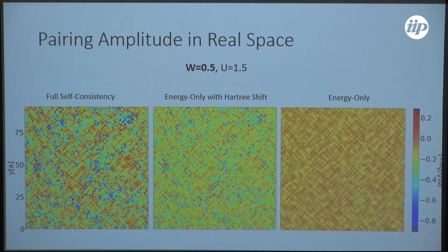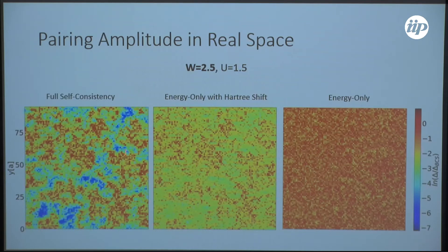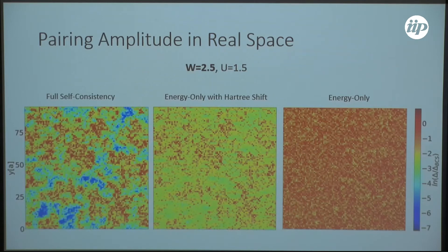If we increase our disorder strength, islands start to develop. We really start to see an insulating seed developing around areas where the pairing amplitude is actually increased with respect to the BCS value. When we look at the intermediate scheme, we see something similar but again way less pronounced — there are orders of magnitude between here and there, even though we see similar structures developing. In the energy-only scheme without the Hartree shift, we see none of this — there are no structures on the length scale of the coherence length visible; it basically looks only like noise.